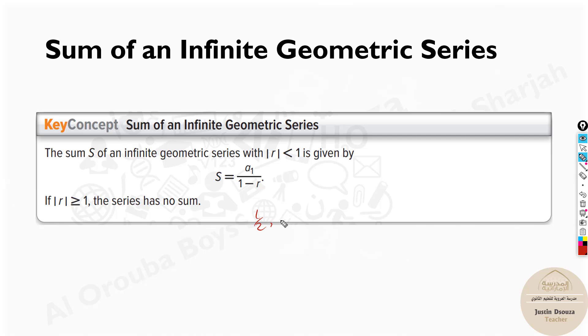Imagine you have half, one fourth, and one by eight, one by 16, keeps on going. It keeps on going forever, right? But still you can find its sum using this formula.